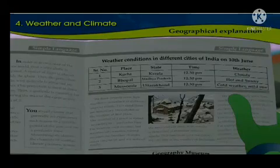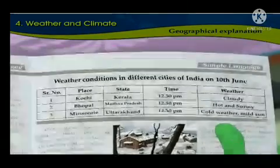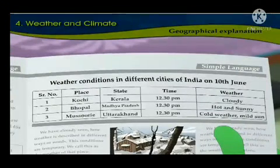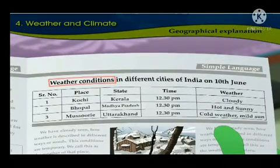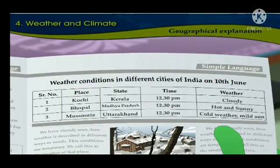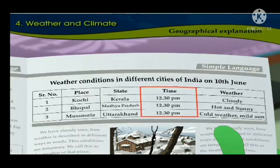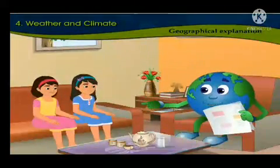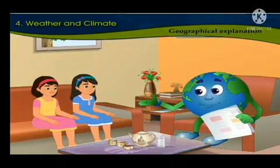Geographical explanation. Look at this chart. This chart shows weather conditions in different cities of India on 10th June at a particular time, that is at 12:30 in the afternoon. Come, let us study the chart. Tell me: in which city would the clothes on the clothing line dry quickly?